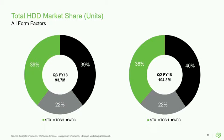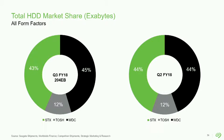Hard drive market share: as most of you know, there are only three competitors left in the industry. Looking at units for last quarter, we are quite evenly split with our largest competitor WD, and then Toshiba has about 22%. But the devil is in the details. If we switch to capacity, both us and WD are shipping much more enterprise drives — our share goes up to 40% plus and Toshiba is down to just 12%.